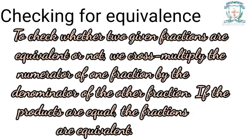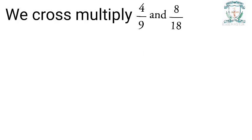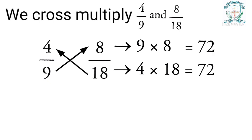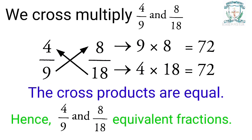Checking for equivalence: to check whether two given fractions are equivalent or not, we cross multiply the numerator of one fraction by the denominator of the other. If the products are equal, the fractions are equivalent. For example, check whether 4 by 9 and 8 by 18 are equivalent. Step 1: cross multiply — 9 multiplied by 8 equals 72, and 4 multiplied by 18 equals 72. The cross products are equal, hence 4 by 9 and 8 by 18 are equivalent fractions.